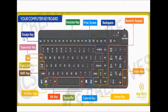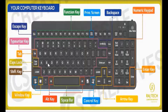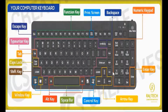The keyboard has many keys: typewriter keys or alphabet keys, function keys, print screen, backspace, numeric keypad, enter key, arrow keys, control key, alt key, and shift key. Typewriter keys — A, S, D, F — are arranged like a typewriter keyboard and are used to type letters or words. The numeric keypad is used to type numbers, from zero to nine.